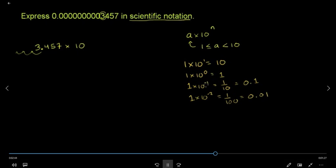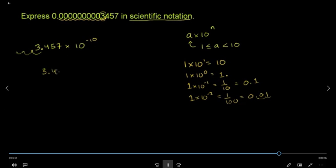If you have minus 1, you will get 1 minus 1. If you have minus 2, then you will get 0.0. If you have minus 2, then you will know that it is 3.57. If you have minus 1, you must get your position. So, the value of this is 10 in the distance. 10 raised to minus 10 is a problem.